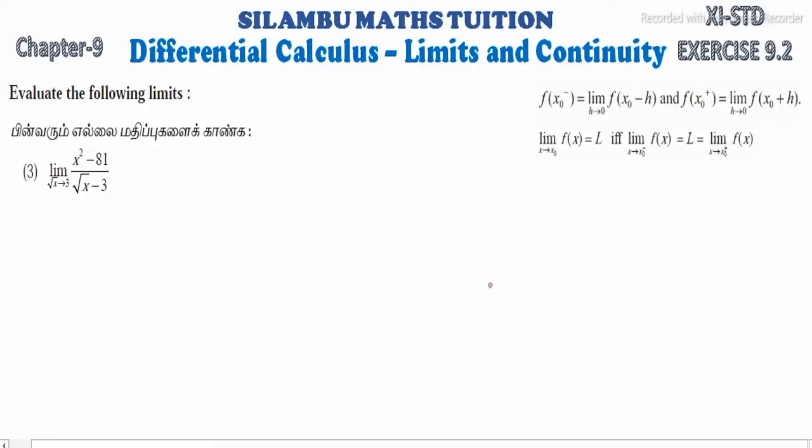Hi student. This is Silambu Maths Tuition, 11th standard exercise 9.2 question number 3. Evaluate the following limits. Limit root x tending to 3, x square minus 81 divided by root x minus 3.